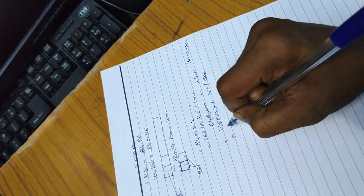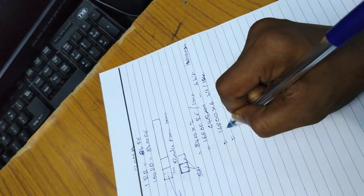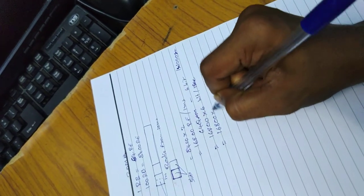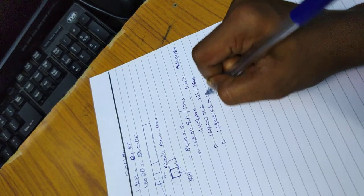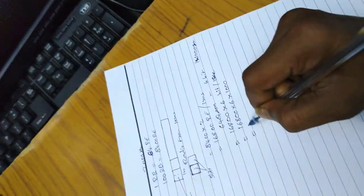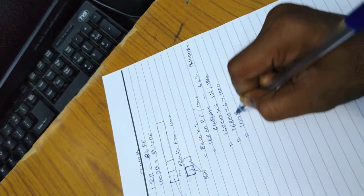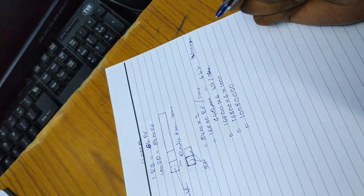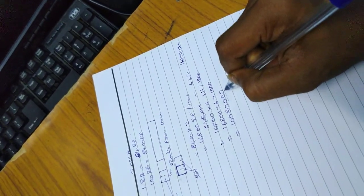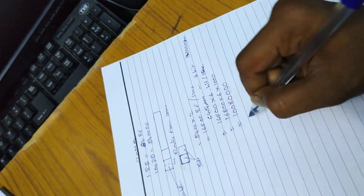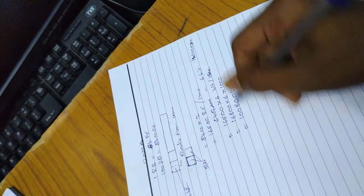So 16,800 into 6 into 1,000 equals 100,800,000. This is the multiplication with 1,000 and 6.